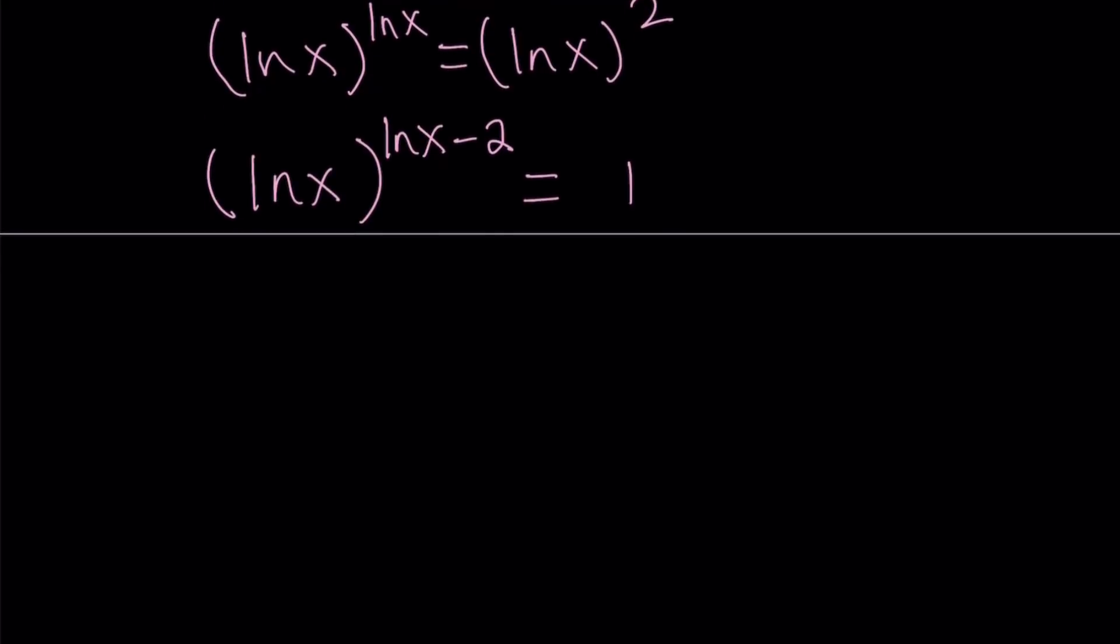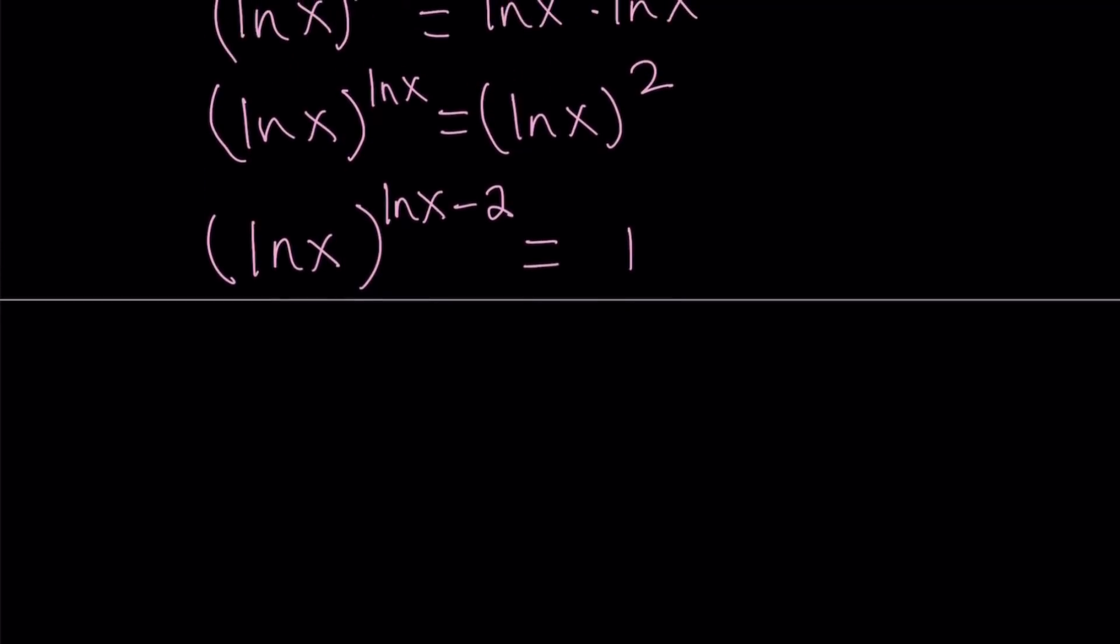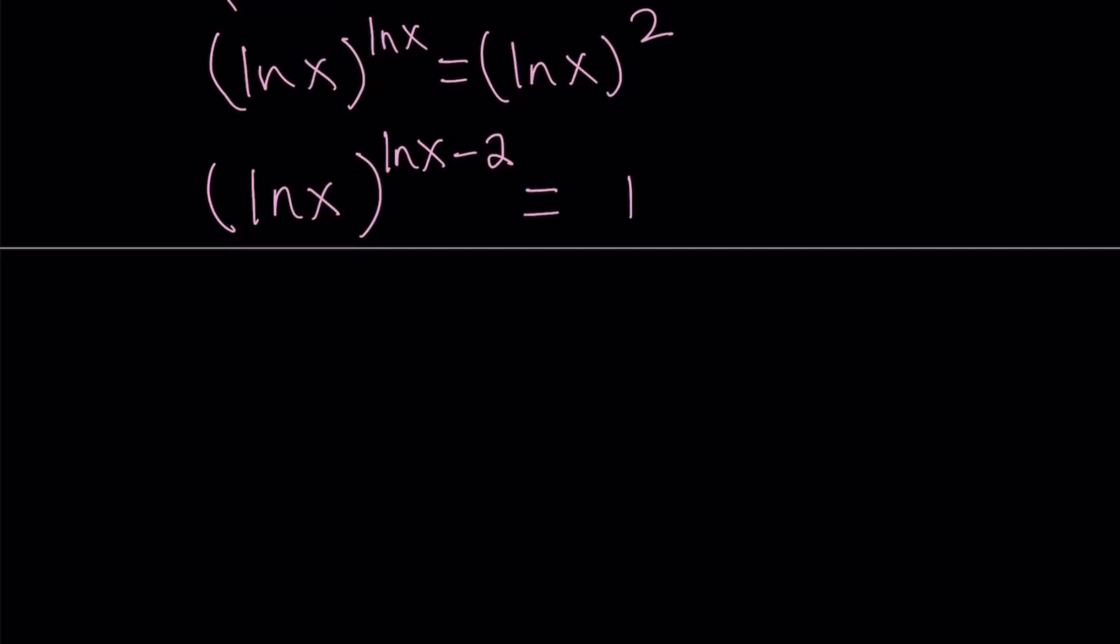All right, great. So from here, we get a couple of different possibilities. If something to the power of something else is equal to one, I think in a previous video we talked about this, then you can say three things: a is equal to one and then b can be anything; a is equal to negative one and then b has to be even; or b is zero but a does not equal zero. So a can be anything in this case. Make sense? So all these are the different cases we're going to be looking at.